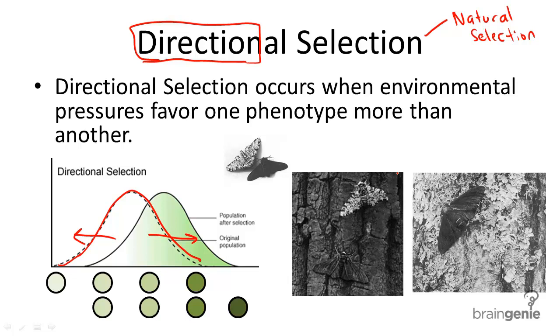In this example to the right, moths — these populations of moths — can be born in a variety of different traits. They can be born black, white, gray, and all these varieties in between.